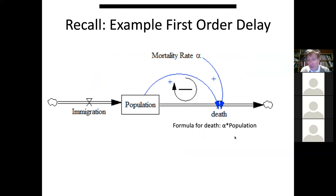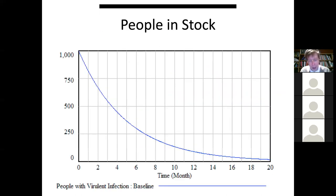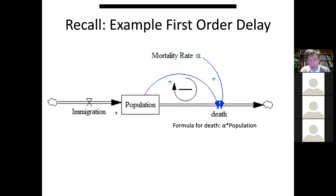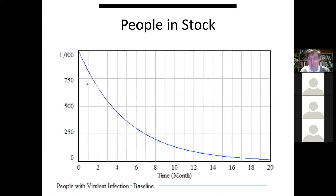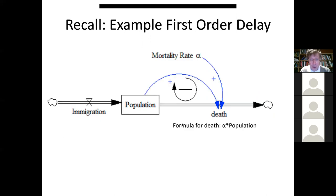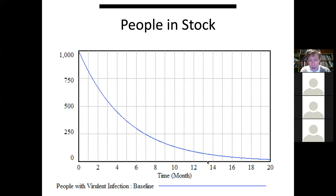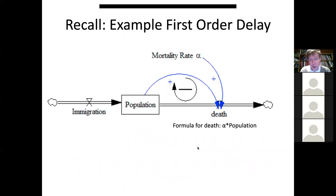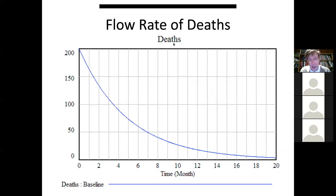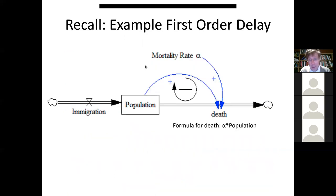Here's our formula for the first-order delay. Death equals alpha times X — with alpha fixed, this is some constant. This lends goal-seeking behavior. With immigration zero, the value of the stock — the number of people in the population — will drop: initially very quickly, then slower and slower. Why slower? Because deaths occur at slower rates as there are fewer people to die. Deaths are completely proportional to the people in the stock — that's what distinguishes a first-order delay. Its outflow is proportional to the value of the stock.